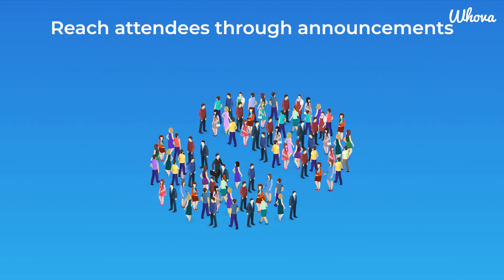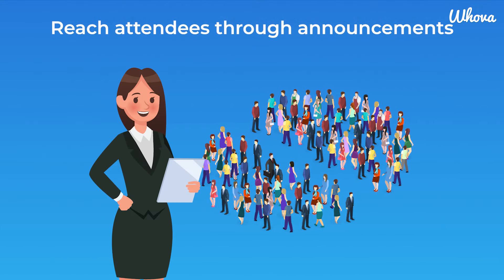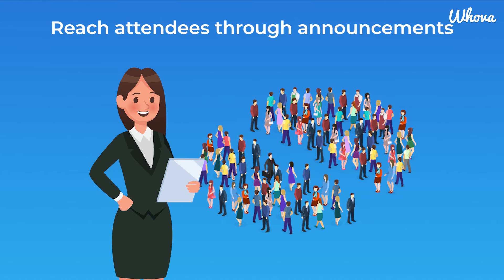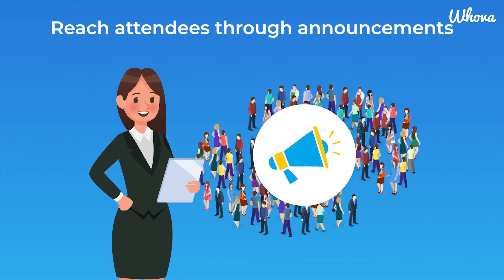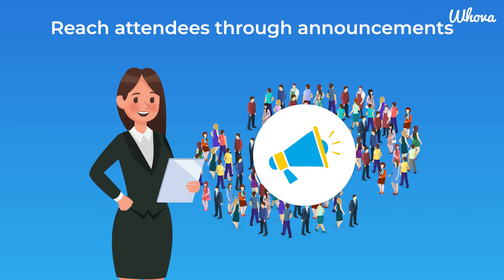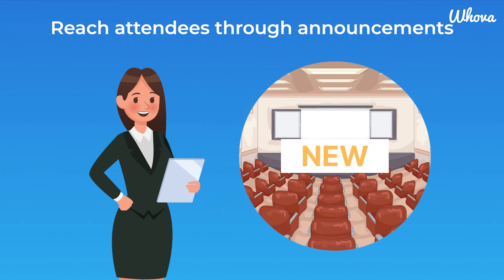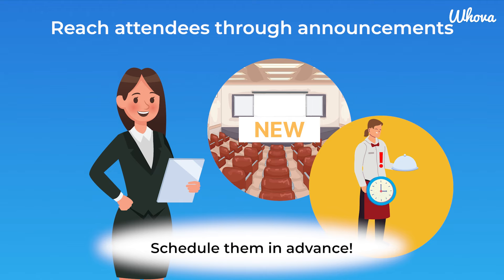Another important part of a successful event is the ability to effectively communicate with your attendees. Use our announcements feature to help your event run smoothly. Keep attendees informed about room changes, delays, or general information. You can even schedule announcements in advance.